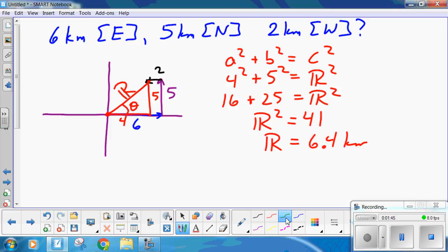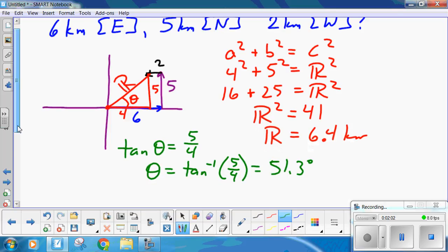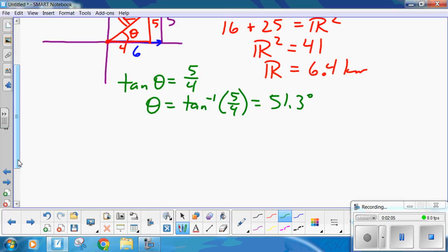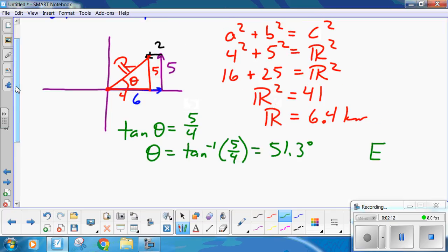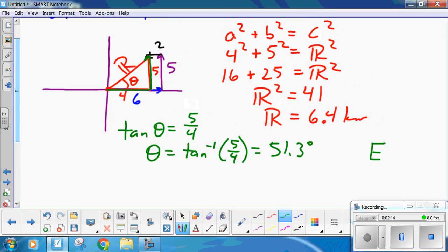4 kilometers, 5 kilometers. Tan of theta is the opposite. So, I've got 51.3 degrees, and this is mostly going east. And then you swing north, so it would be north of east. And notice I abbreviated N and E. You can do that.